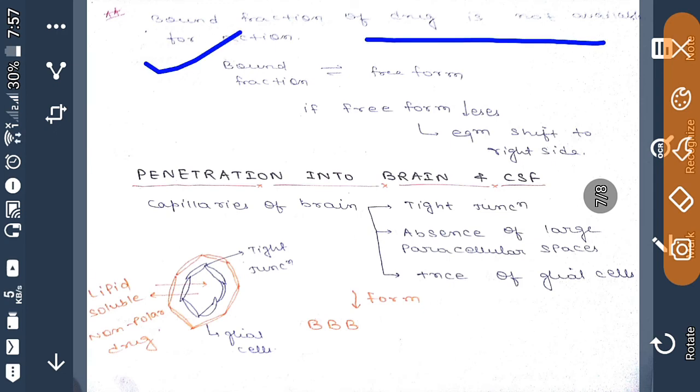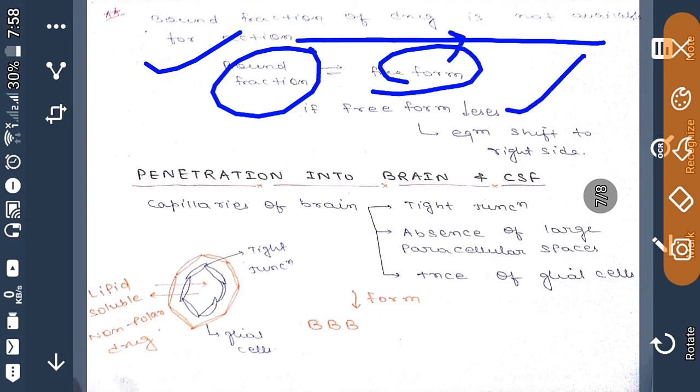Now bound fraction of drug is not available for action and this bound fraction is in equilibrium with free form of the drug. If free form decreases, then equilibrium shifts to the right side.